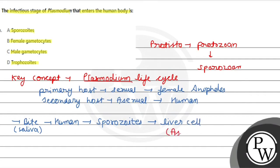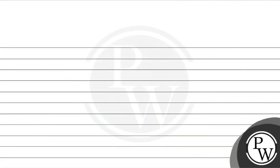Under the secondary host, asexual reproduction takes place. The number of cells will increase through multiple types of cells. These cells will burst and then enter the RBC. The form that enters the RBC is called Merozoites.